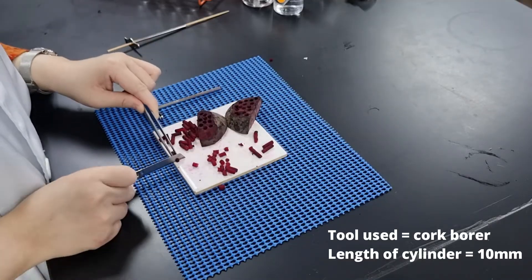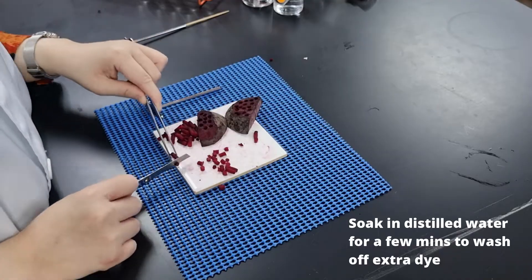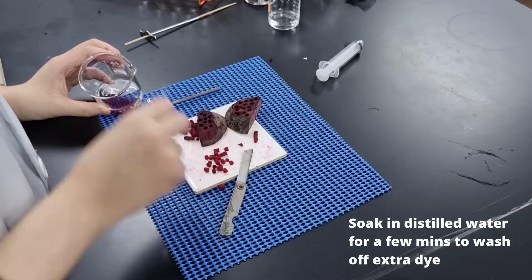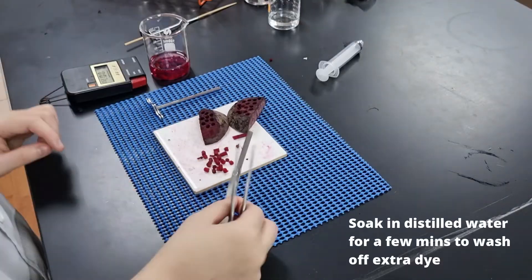After that, we actually take these 25 pieces of beetroot and soak them in distilled water for a few minutes just to wash off the extra dye that was produced due to the cutting process.